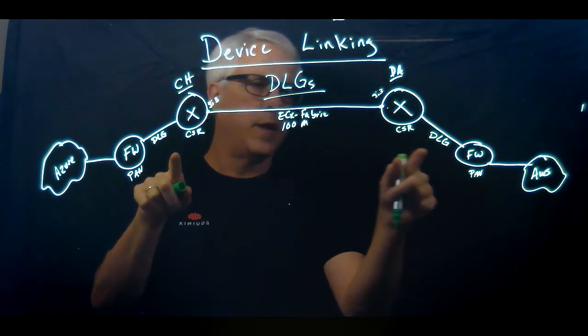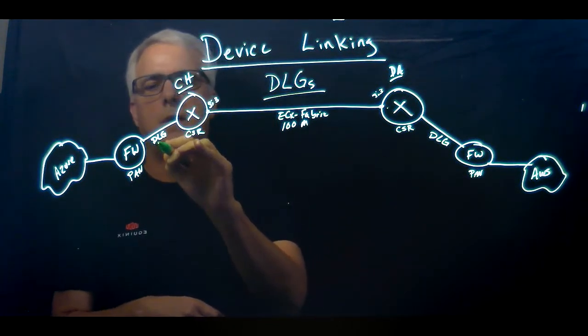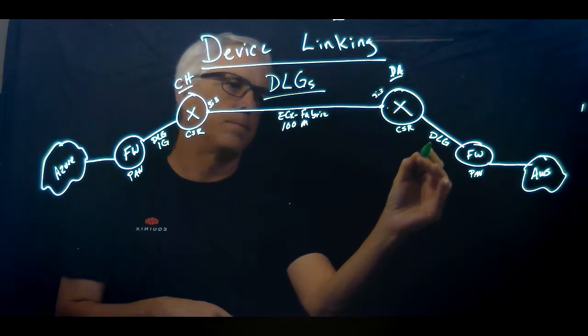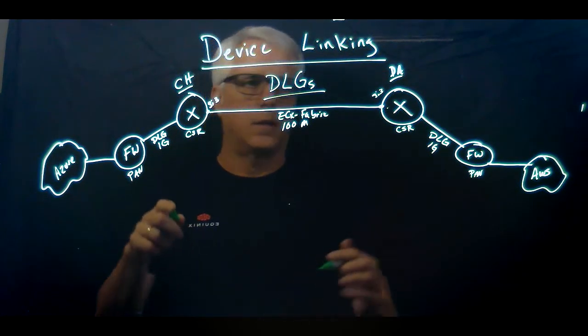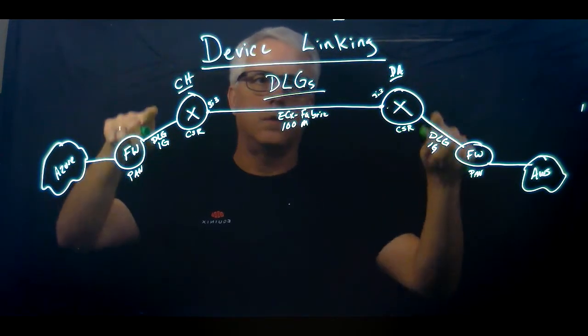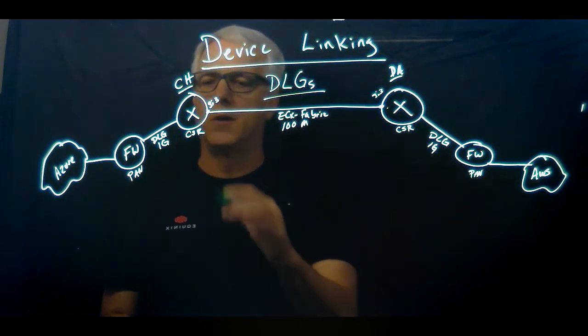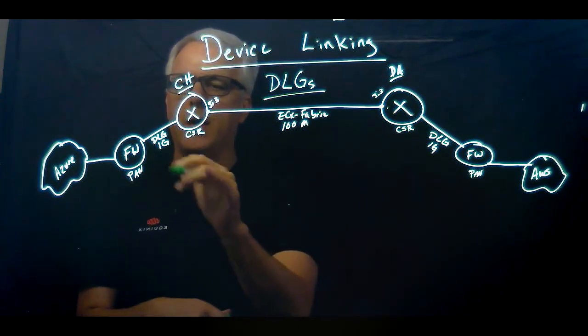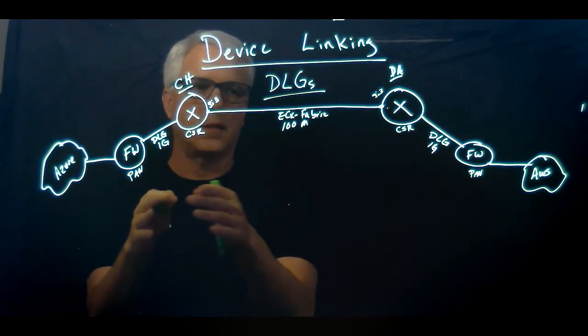and I might want larger bandwidth. So across this one, I'll set this to a one gig circuit speed, a one gig connection from the firewall to the router. So right now, I've created basically an entire network.